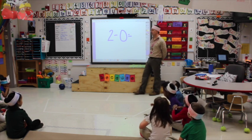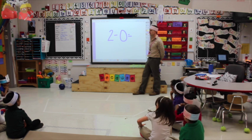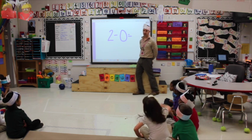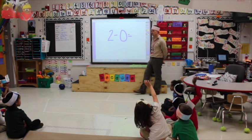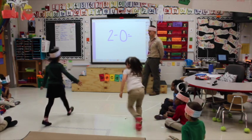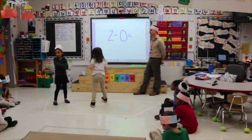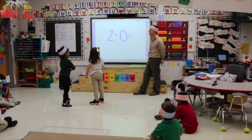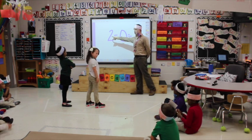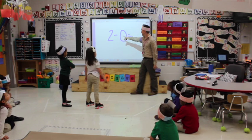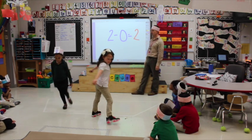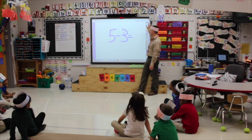Zero means nothing left. Two minus zero equals... So how many people are on my boat? Two. Nicholas, how many people are getting off the boat? Zero. So how many are left, Nicholas? Two. Two minus zero equals two. Very good. How many people are left on my boat? Two.